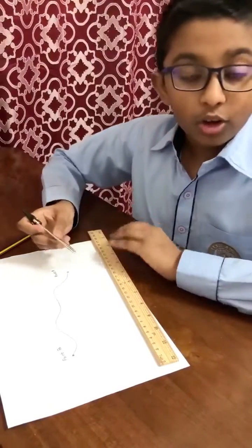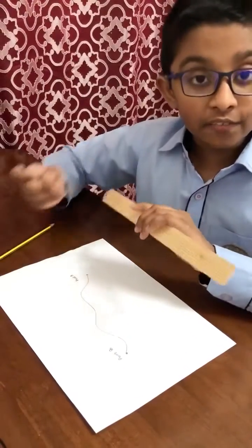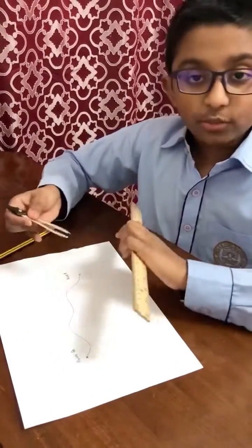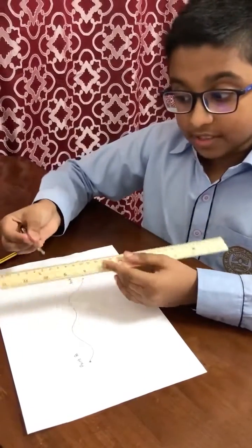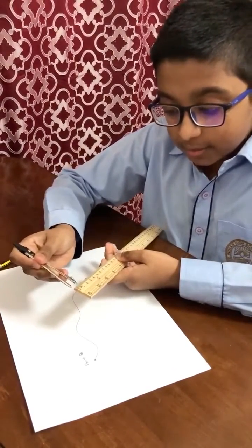Now, we are going to measure using the divider. First, we take the divider and our scale. Then separate these two lines to match 1 cm.